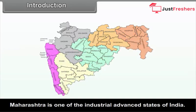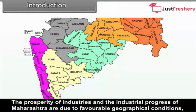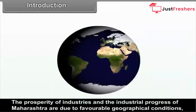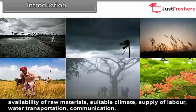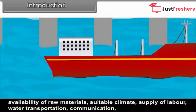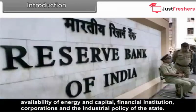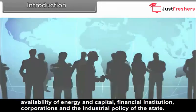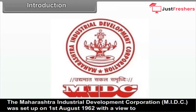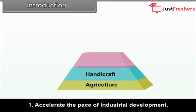Maharashtra is one of the industrially advanced states of India. The prosperity of industries and the industrial progress of Maharashtra are due to favourable geographical conditions, availability of raw materials, suitable climate, supply of labour, water, transportation, communication, availability of energy and capital, financial institutions, corporations and the industrial policy of the state. The Maharashtra Industrial Development Corporation, MIDC, was set up on 1st August 1962 to accelerate the pace of industrial development.